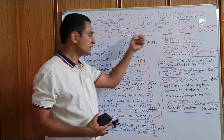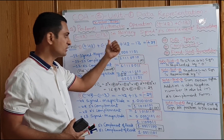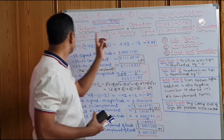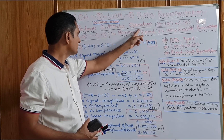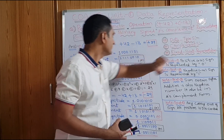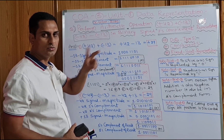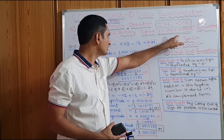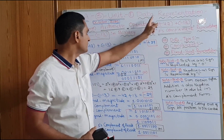From this topic, a question was given in the October 2020 question paper. By seeing this question, students may get confused. The question given is: perform arithmetic operations — plus 42 plus of minus 13 (first one), and minus 42 minus of minus 13 (second one) — in binary signed two's complement representation.